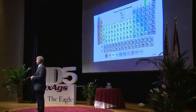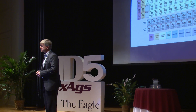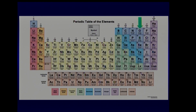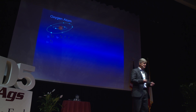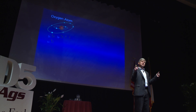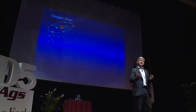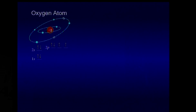Oxygen sits at number eight on the periodic table. I also want to point out what's below it — sulfur. Keep that in mind because it will come up later in the presentation. Oxygen has atomic number eight, which means it has eight protons and eight electrons orbiting the nucleus. Those electrons are organized in orbitals, and each electron has a spin of its own called a spin resonance. The electrons like to organize themselves in the orbitals with two electrons of opposite spins, organized in progressively increasing orbitals away from the nucleus.